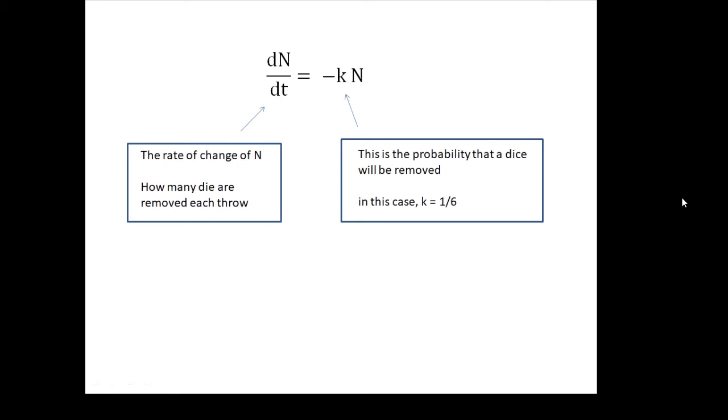So dn/dt equals minus kn. dn/dt is the rate of change of n. It's how many dice are removed each throw. If you like, delta n is negative. It's the number of dice removed. n is going down. k, my decay constant in this case, is the probability that a dice will be removed. And if we're taking all the sixes away, then it'll be one sixth, one over six, that will be my decay constant.